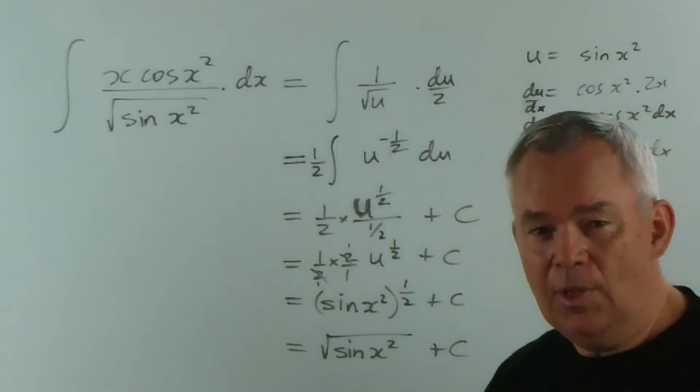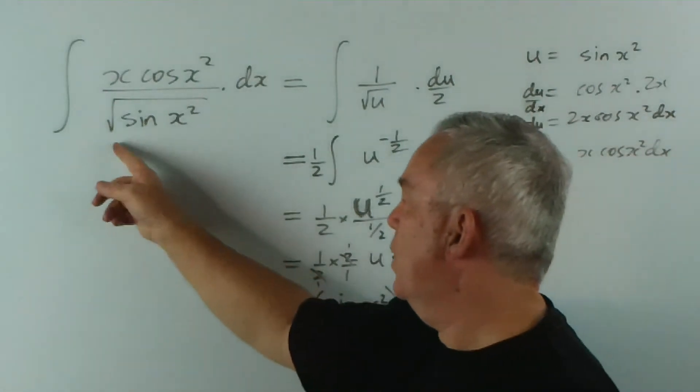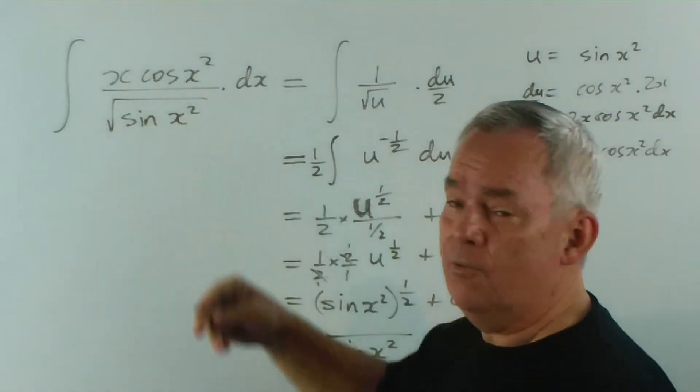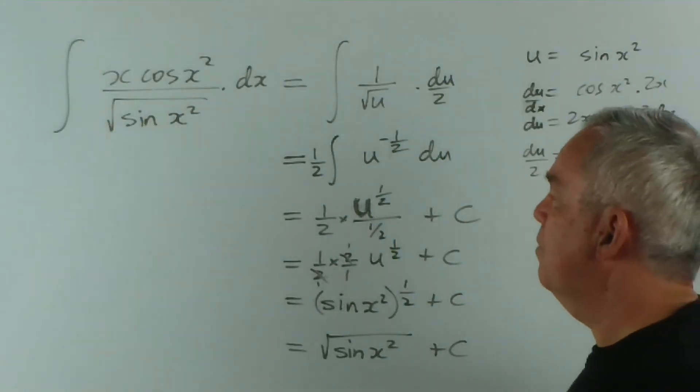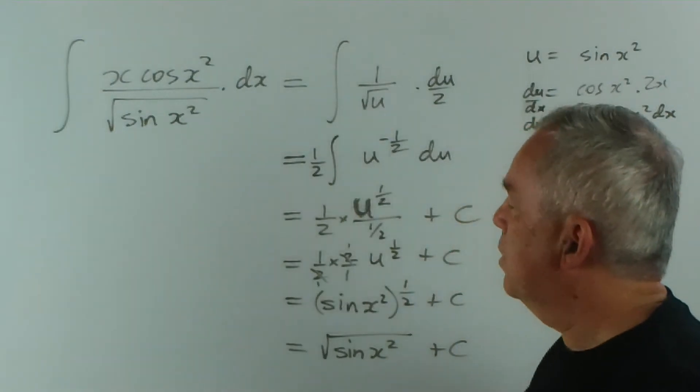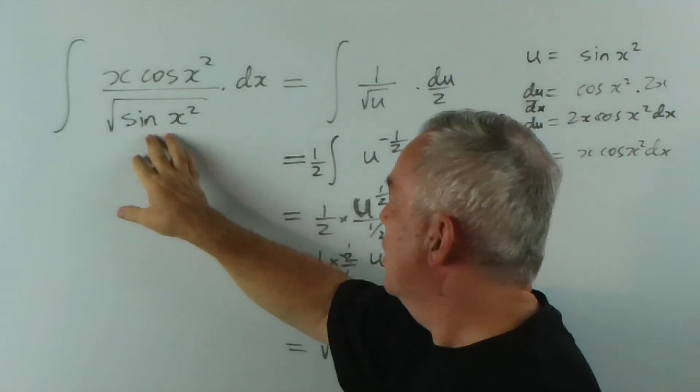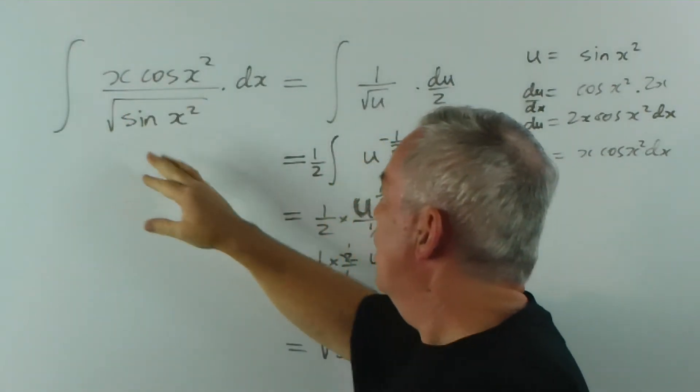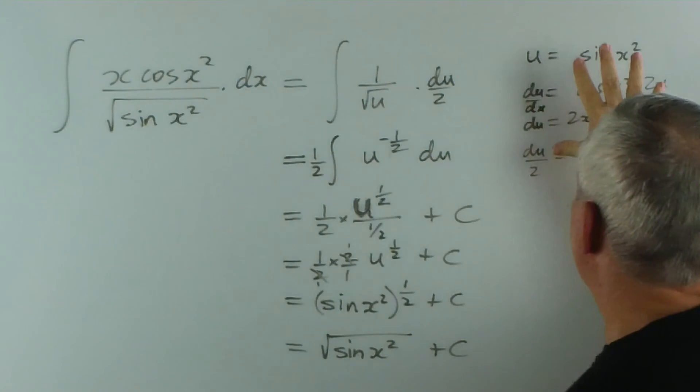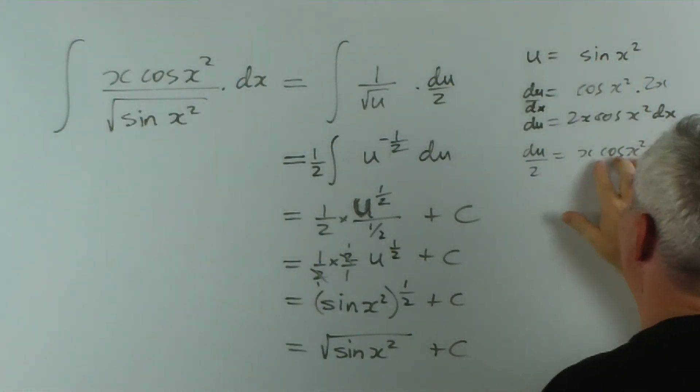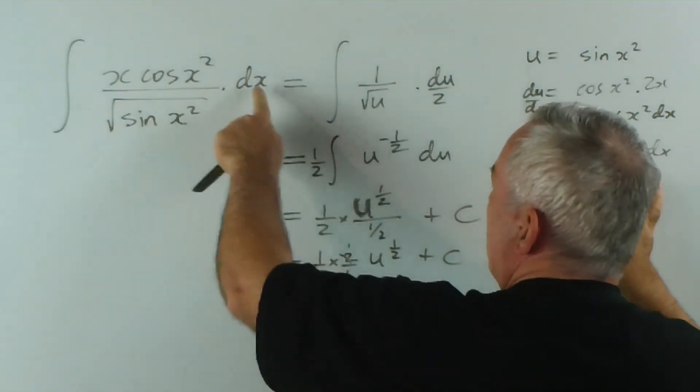Now it turned out not to be logarithmic, and that's because of this square root sign. If the square root sign wasn't there, we would, in fact, have a logarithmic expression. Because of the square root sign, it turned out to be something else. But recognising that we had the derivative of this on the top would have helped us understand that our substitution would work, because we wanted that derivative to create the du.